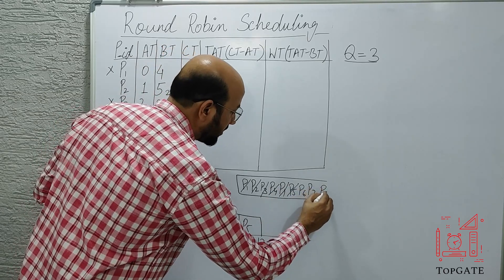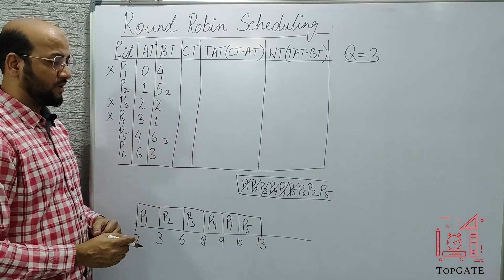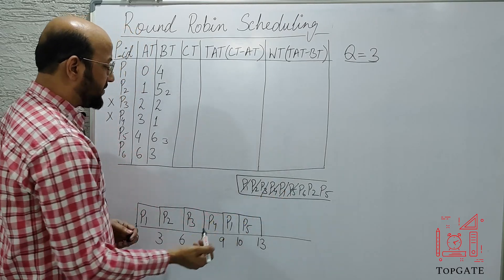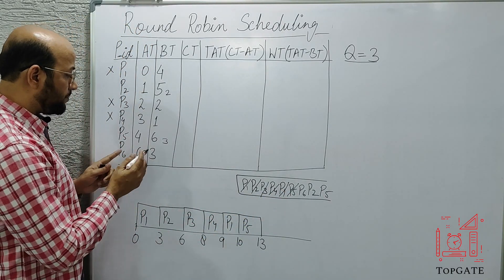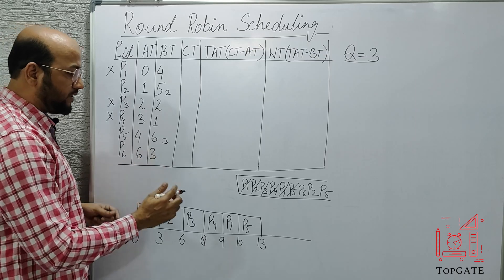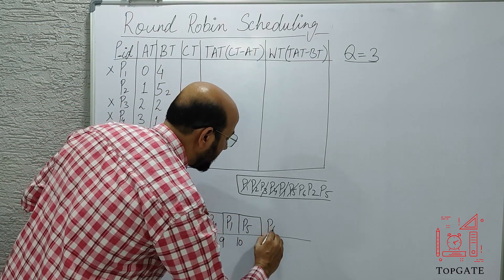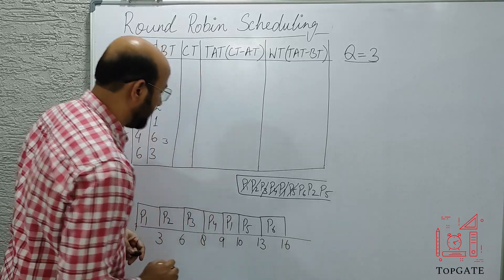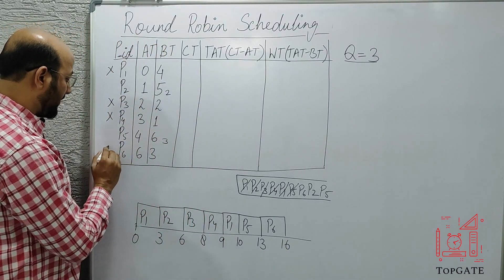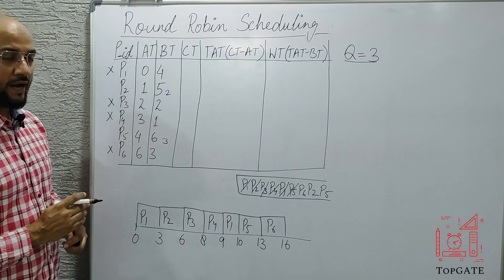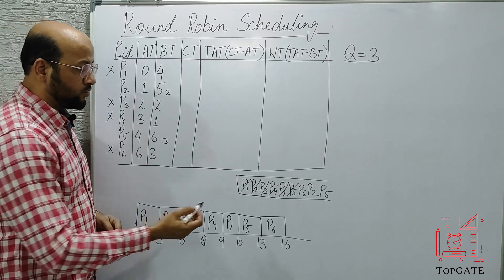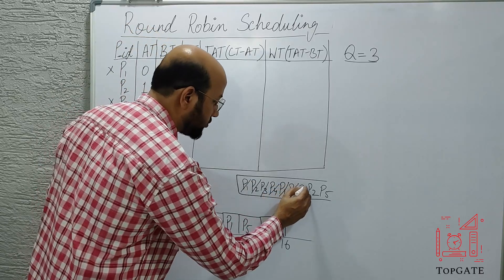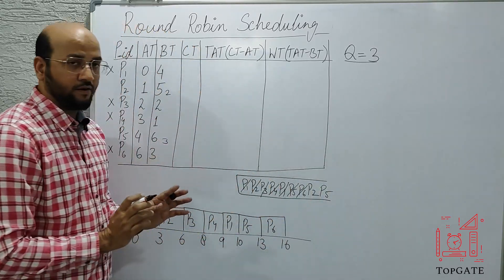The next process at the head of the ready queue is P6. P6's requirement is only three, so it starts at 13 and stops at 16. P6 is also completed, terminates, and goes out of the system. P6 is done, so I cut it and don't write it.